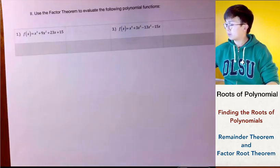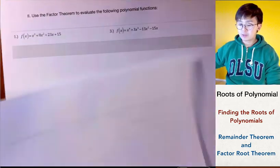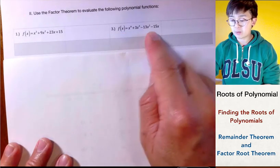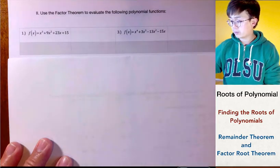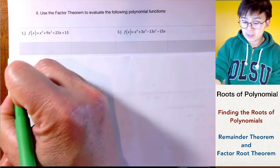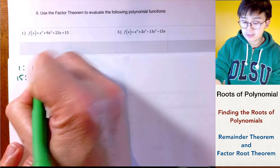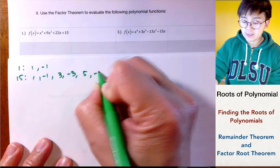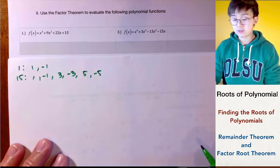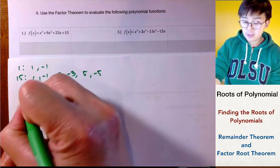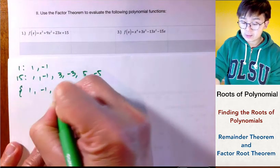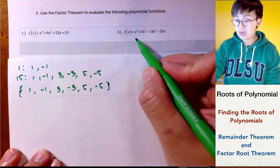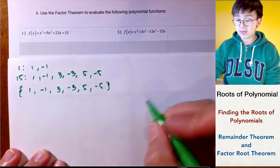For problem number 2, we use the leading term and last term. The leading coefficient is 1 and the constant is negative 15. The factors of 1 are 1 and negative 1, and the factors of 15 are 1, negative 1, 3, negative 3, 5, and negative 5 — these are the possible solutions of our fourth-degree polynomial. Note that this polynomial has a missing term.